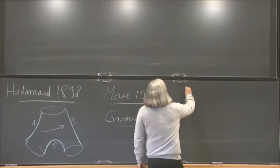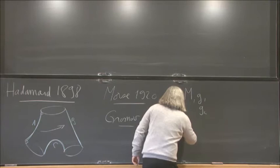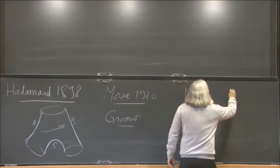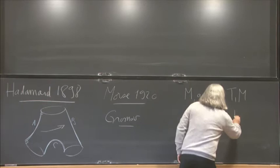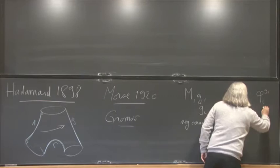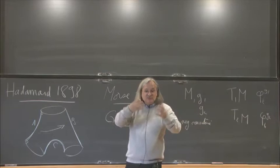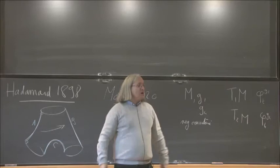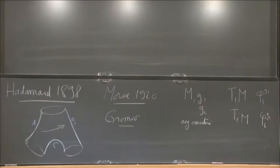The theorem is: if you take a manifold and two Riemannian metrics with negative curvature, and you look at the unit tangent bundles of each metric with their respective geodesic flows, these two geodesic flows are conjugated by a homeomorphism. So qualitatively, the two geodesic flows are the same. This is a fundamental observation.